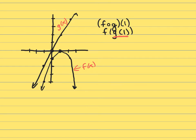So g of 1 means what is the y value when x is 1. So when I go to my g graph and I go over to 1, the y value is 2. That's the point (1, 2). The y value is 2.